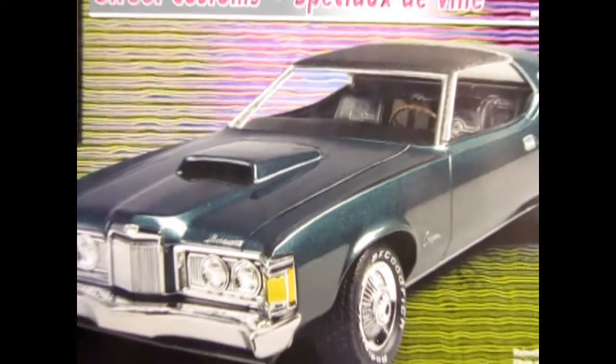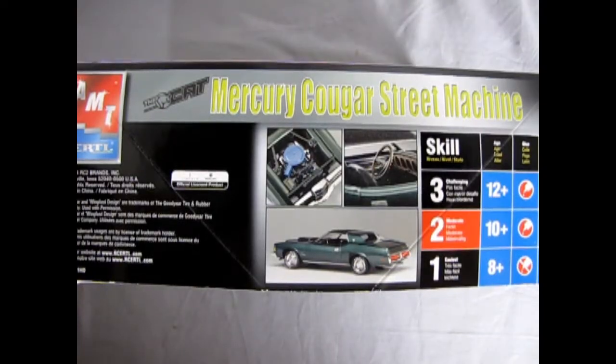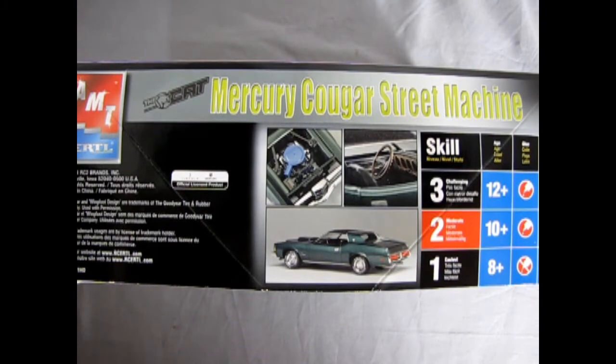And now we get to go all the way back to our Mercury dealer as we check out the Mercury Cougar Street Machine by AMT Ertl. This Mercury Cougar Street Machine is a skill level 2 kit for ages 10 and up. It does require paint and glue and it's got a great engine under the hood as well as an interior and the tail light profile is excellent.